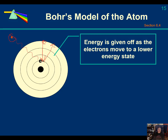Moving an electron from a lower energy state to a higher energy state is what we call absorption. Going from a higher energy state to a lower energy state releases energy, and we call this emission.